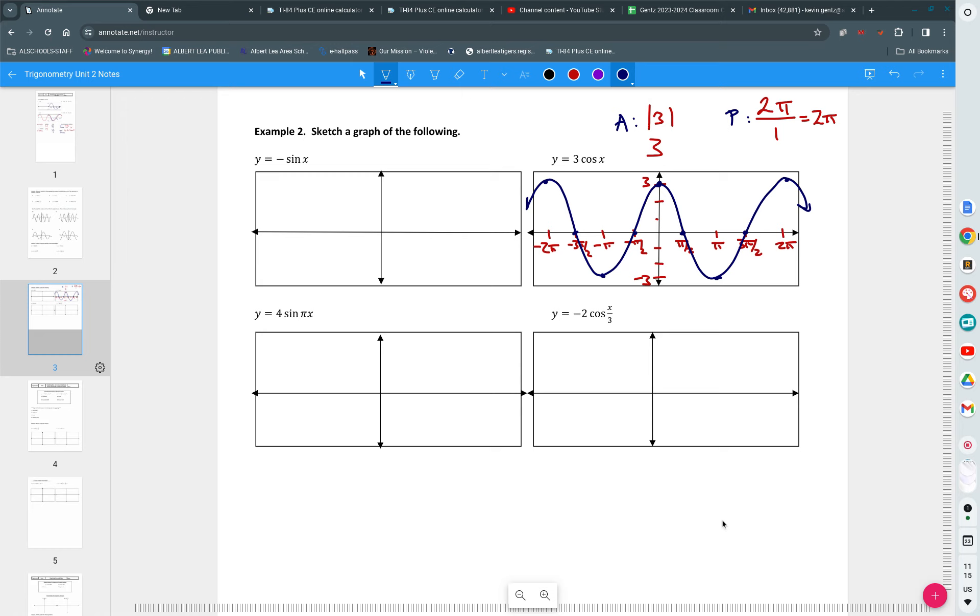The next one, instead of y equals negative sine x, we're going to do y equals negative sine of pi x. So I start by identifying the amplitude. What is the amplitude? One. It's always positive. And then the period is 2 pi divided by pi, which is 2. So I take 2 pi divided by whatever value is in front of x. And notice the value is pi. So I divide that, those cancel, and I get 2.